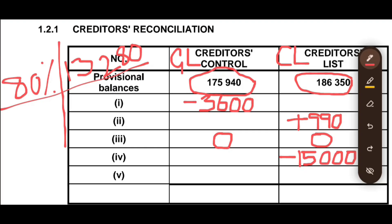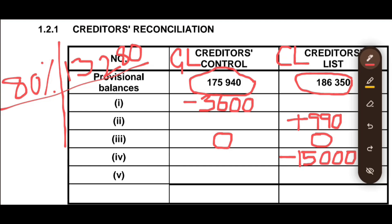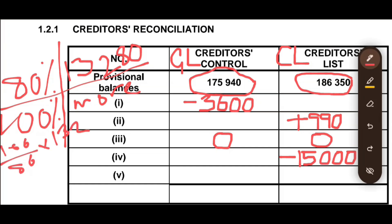To find the original 100%, we calculate: (100% ÷ 80%) × R13,280, which gives us R16,600. So the original amount was R16,600 before the discount was applied. We recorded a 20% discount instead of 10% — we recorded double what we were supposed to.